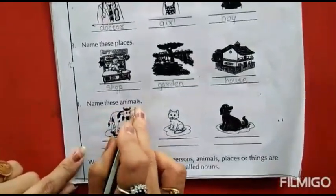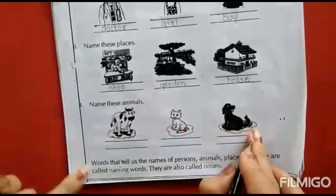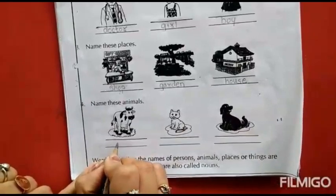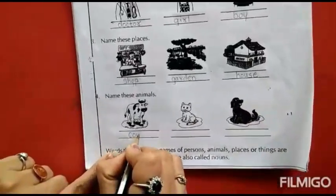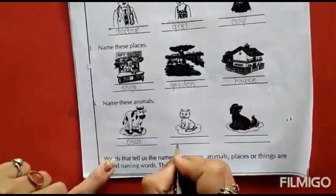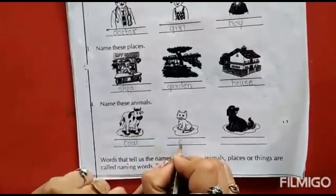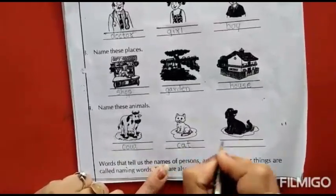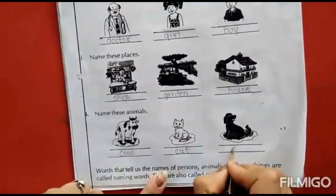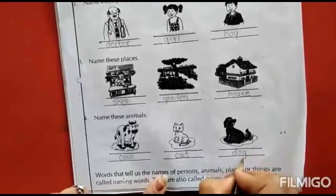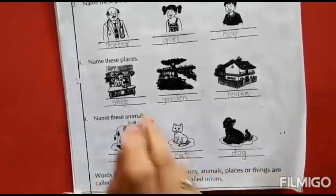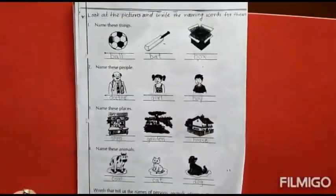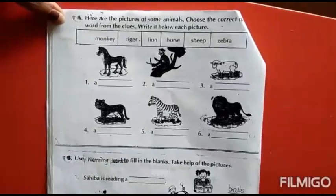Now name these animals. Look at these animals and write down the spelling. C-O-W, Cow. Then C-A-T, Cat. And D-O-G, Dog. Have you understood this page?